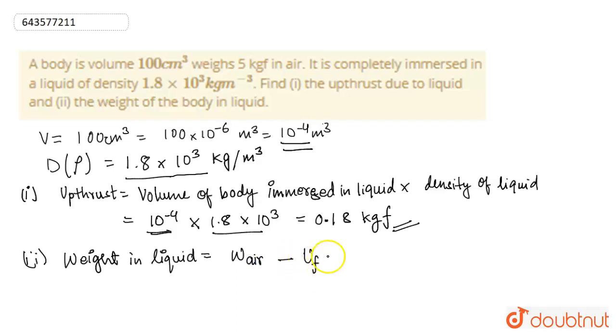Upthrust force, which is equal to 5 kgf minus 0.18 kgf which is equal to 4.82 kgf. So, here is the answer. Thank you.